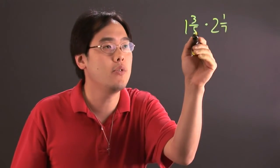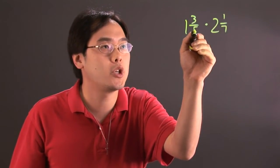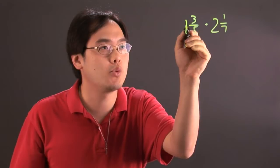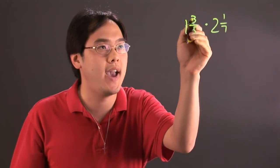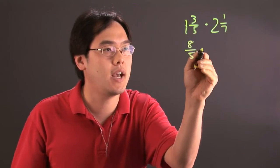As you know, you have to start with the denominator, multiply by the whole number, so five times one, and then add the numerator. So five times one is five, add the three is eight, so you have eight-fifths times.